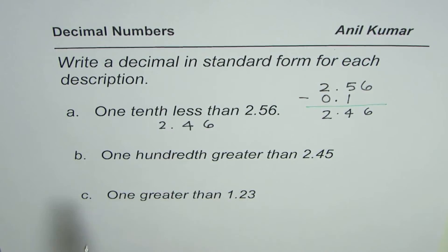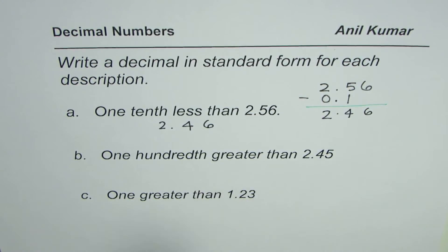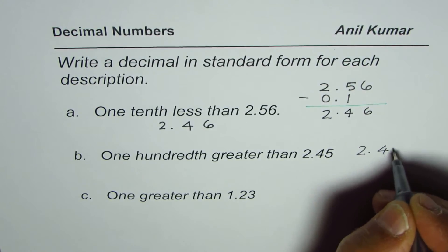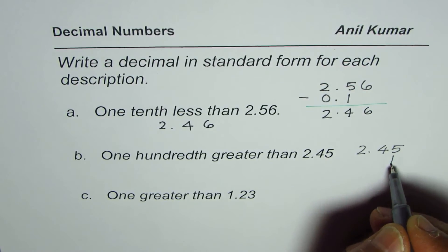One hundredth greater than 2.45. That means you have to add one hundredth to this number. So we have the number 2.45. Adding one hundredth means that is the hundredths position, adding a number here.